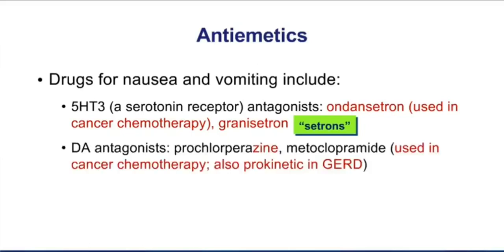The dopamine receptor blockers — prochlorperazine and metoclopramide — are also useful as anti-emetics. These are drugs that block the dopamine D2 receptor. Notice the -zine part of prochlorperazine — back in our section on antipsychotic drugs, we had a group called Typicals, which was haloperidol and the -zines. Prochlorperazine has some weak antipsychotic effects, but it's more commonly used as an anti-emetic, though the mechanism is the same.